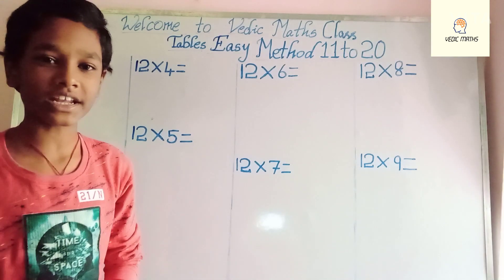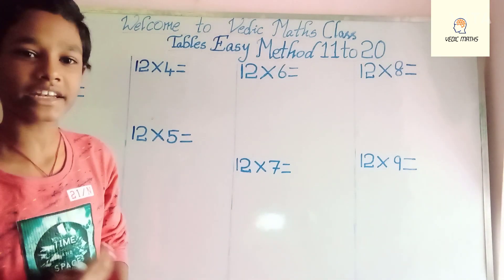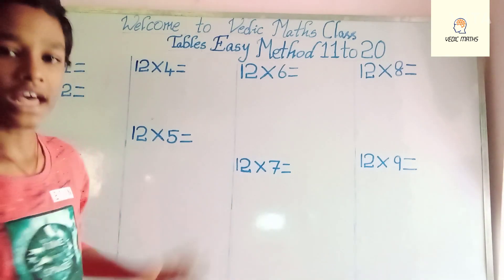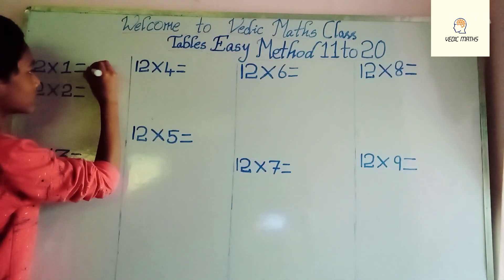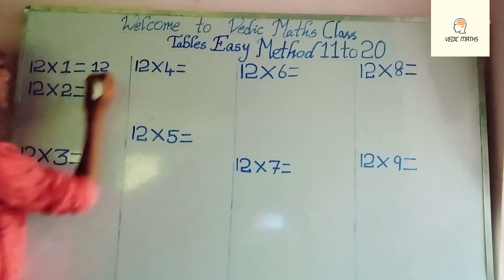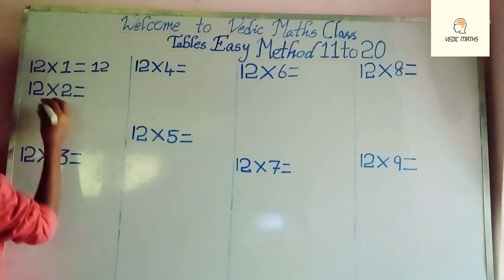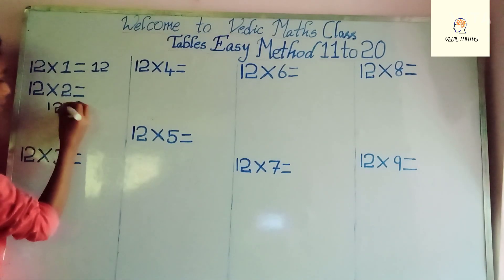Hello friends, welcome to my channel Basic Math. In this video we will be learning table easy method 11 to 20. Let's start with 12 table. 12 into 1 which is equal to 12. 12 into 2: write 12, write 2 here.